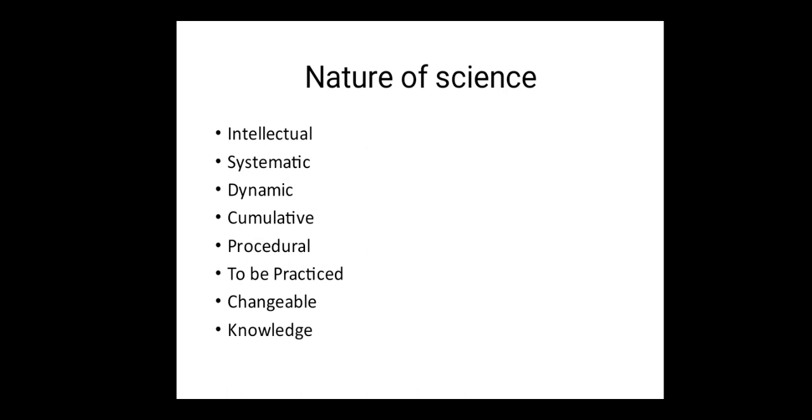So these aspects influence the nature of science and verify how far we are scientific. The aspects such as intellectual, systematic, dynamic, cumulative, procedural, practicable, changeable, and as a body of knowledge.